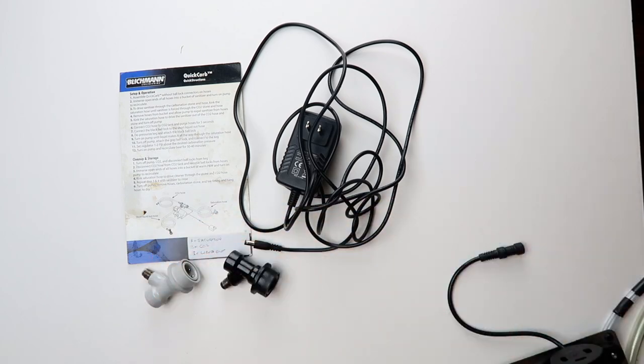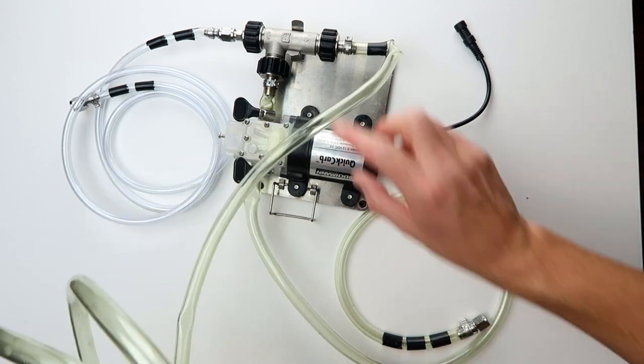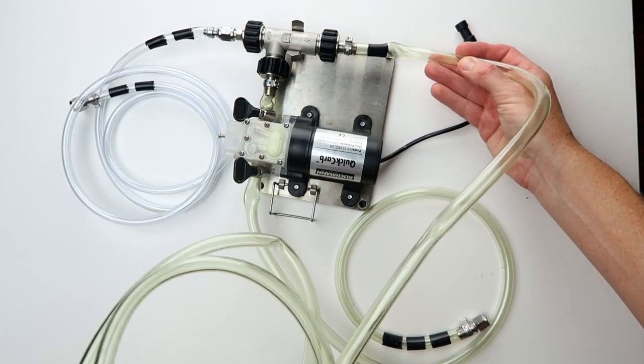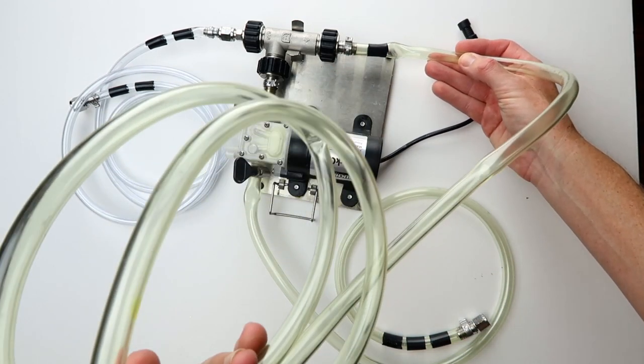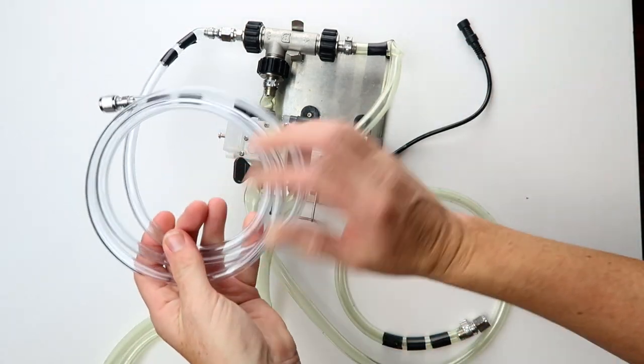Despite its messy look, it's not all that complicated. There's a pump to start with and then there's also a carbonation stone. There are three hoses. Hose number one, which I've labeled with a single piece of tape, is the saturation hose. I find adding this tape really helps me identify which hose is which, it gets confusing.